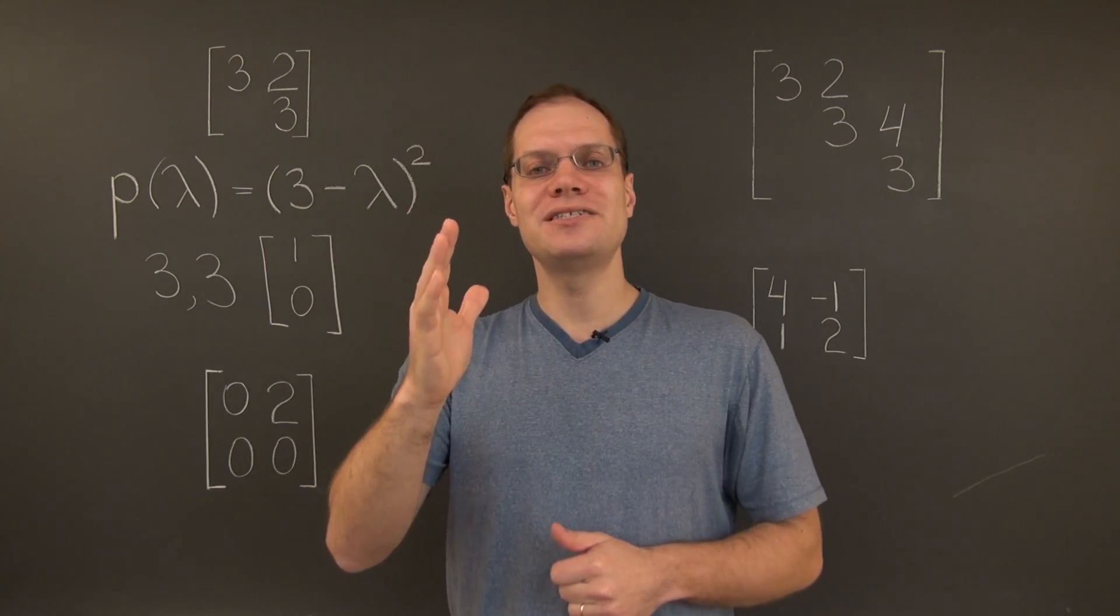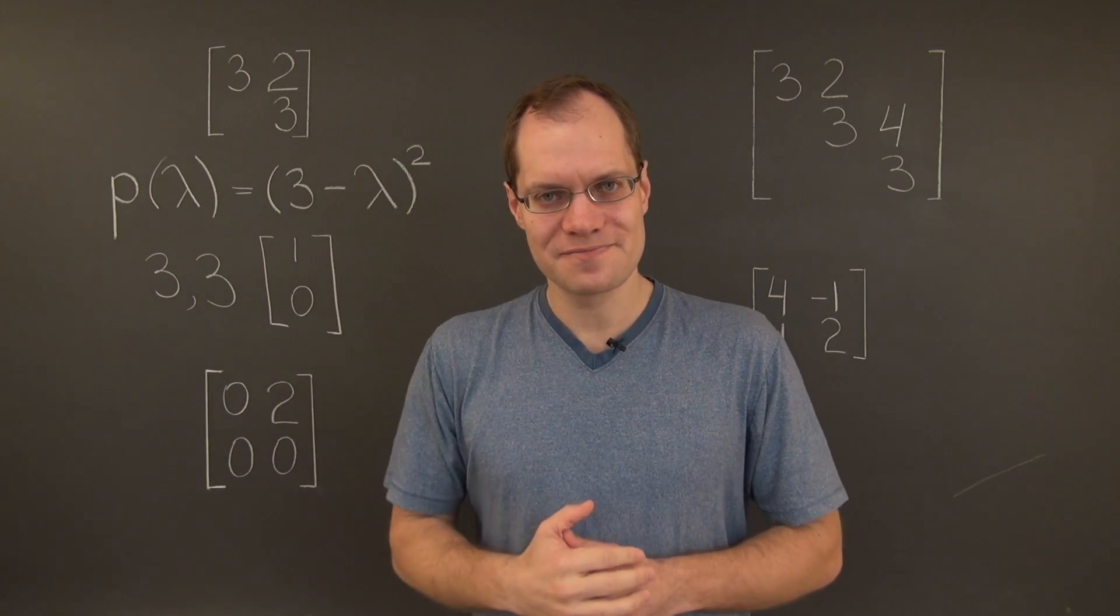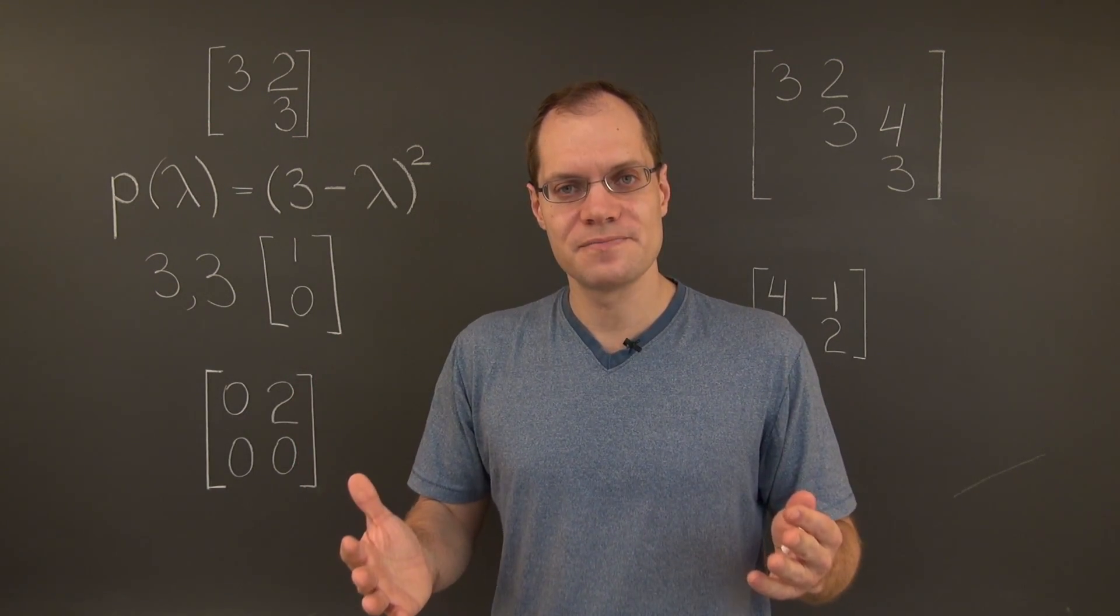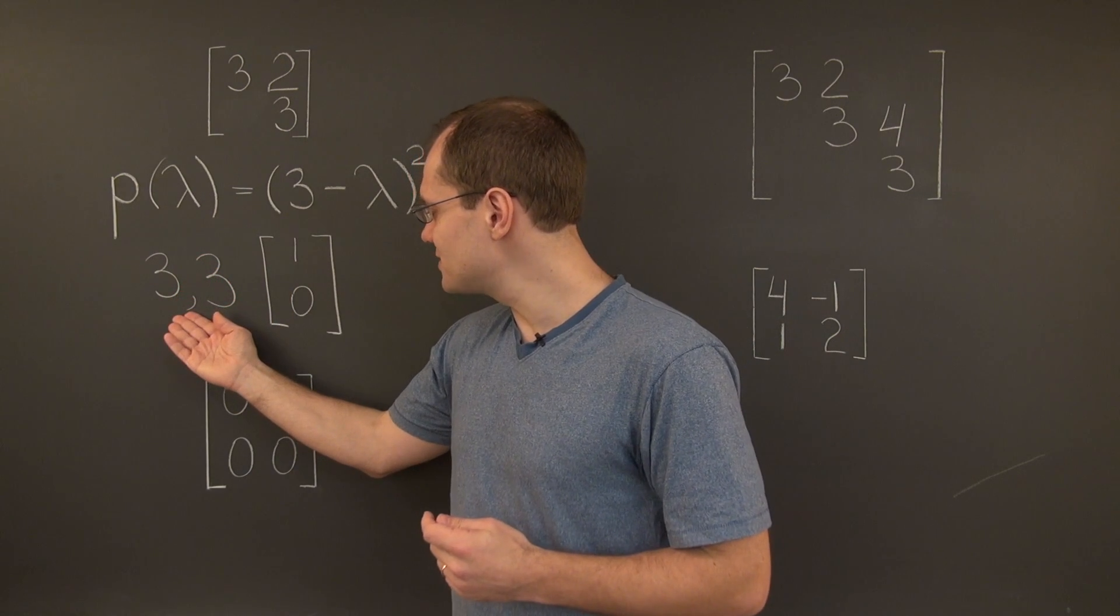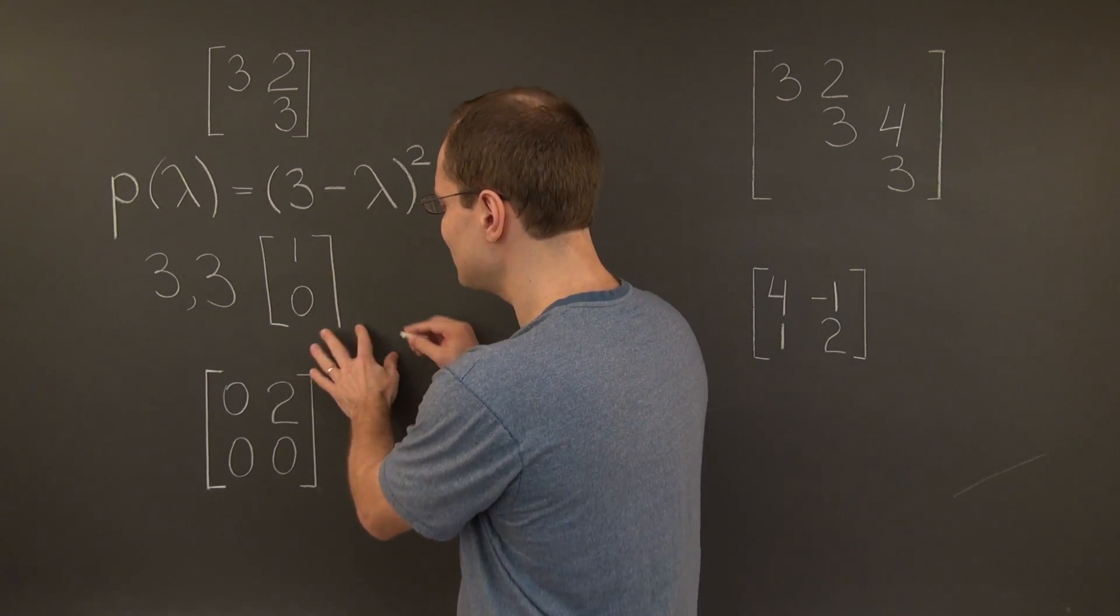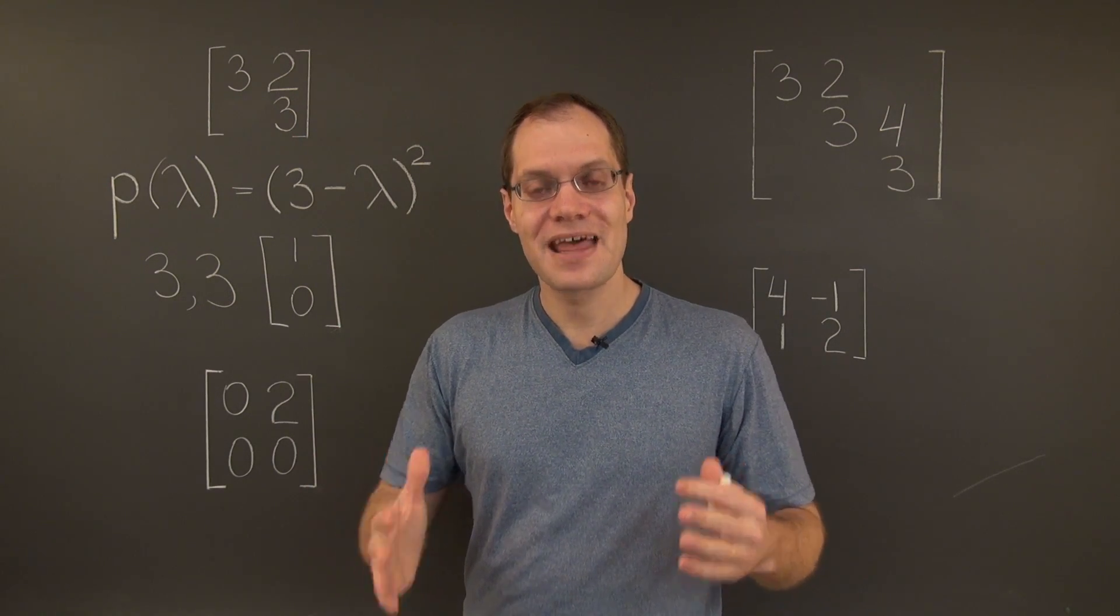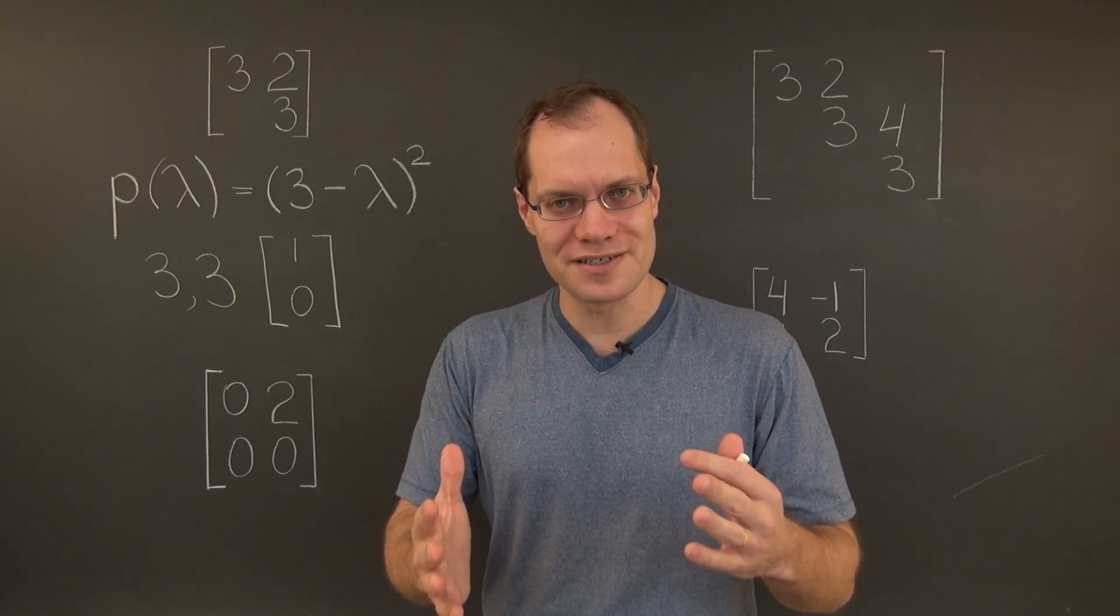And that's what defective matrices give us. And so, the answer to the question that was asked in the earlier videos, is it possible for the algebraic multiplicity to exceed the geometric multiplicity, is yes. And defective matrices prove it.